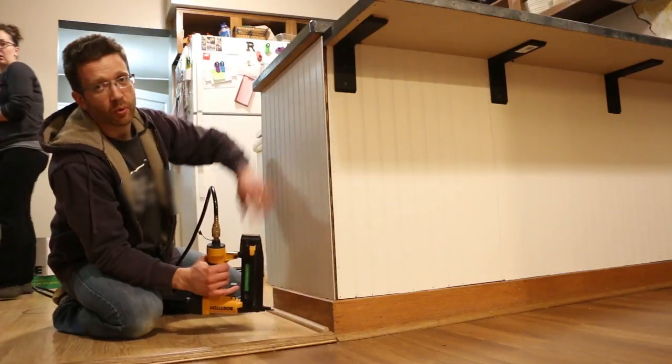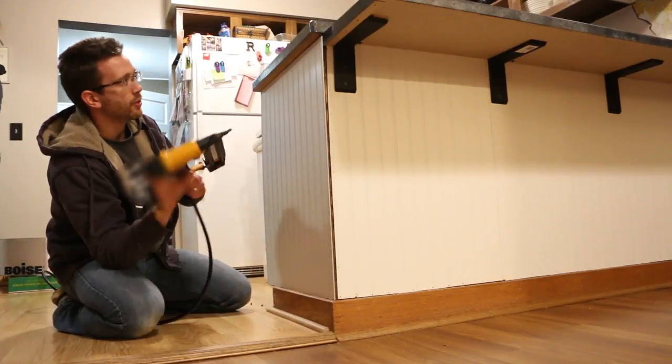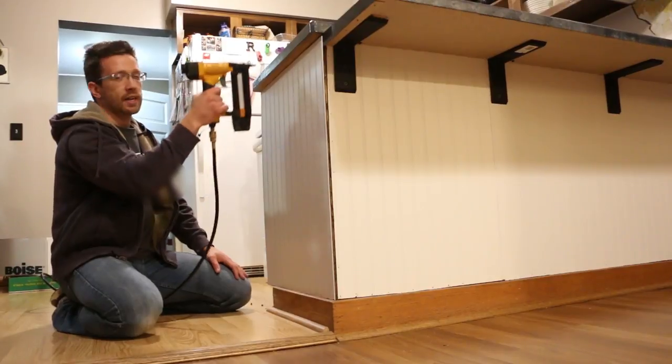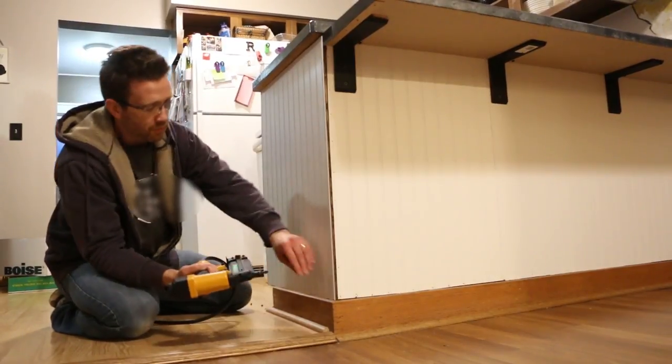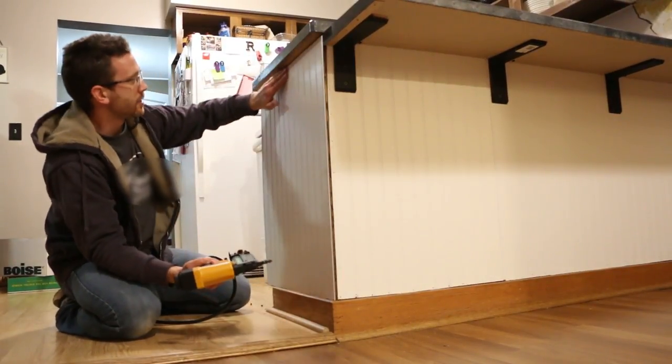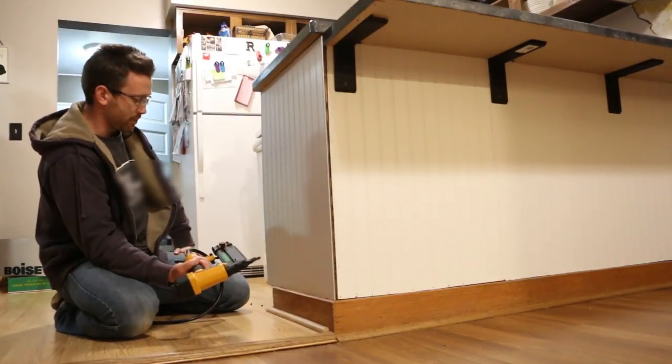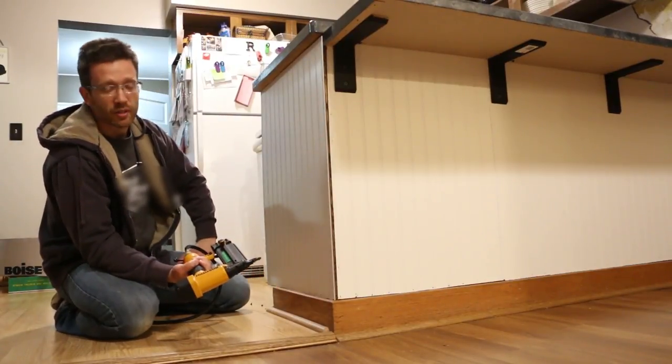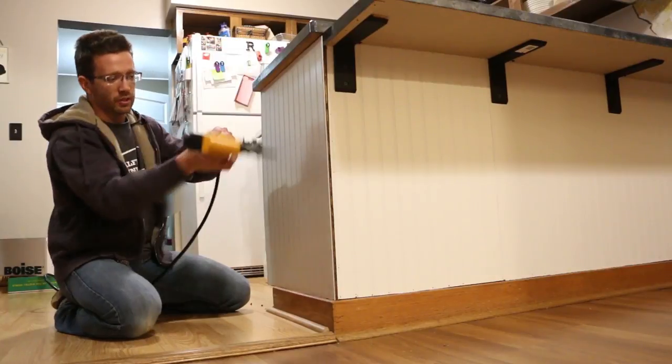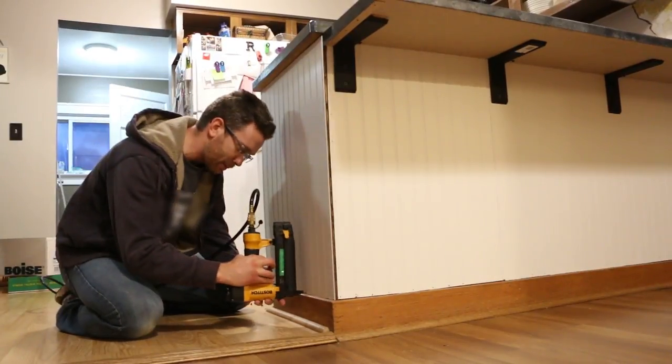When putting beadboard on, if you're using a nail gun, just be mindful that you only want to nail it along the edges you're going to cover with trim. I'm going to put some corner trim here and some round trim along the bottom and top edges. You can also turn the nail gun upside down to get along the bottom edge.